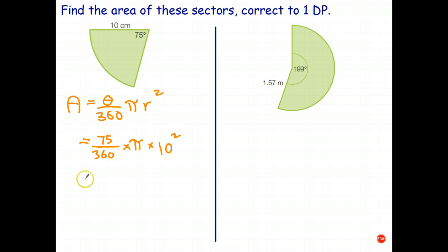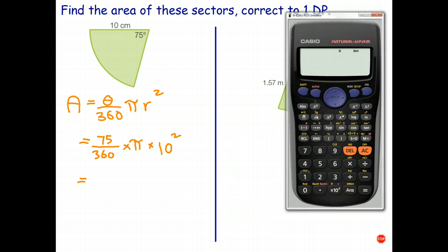And the final step for setting out these questions is to get out the calculator and work out the answer. So in this case I like to actually set it out so it looks exactly like that. So I'm going to use my fraction button, 75 down.